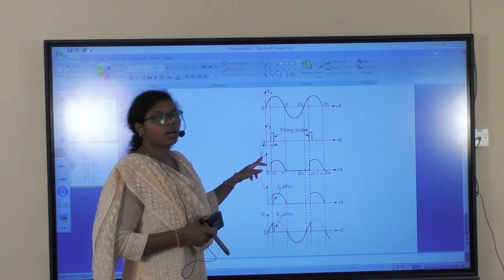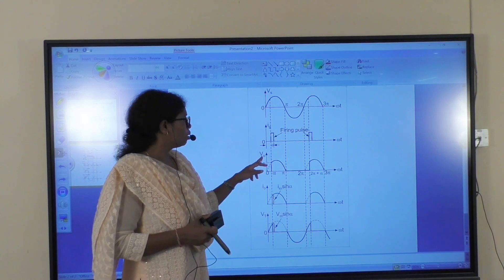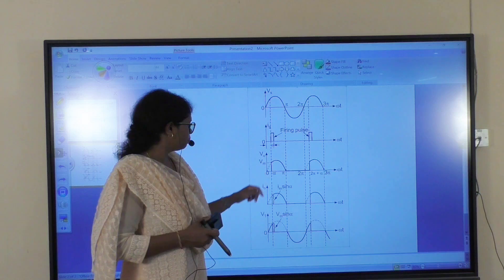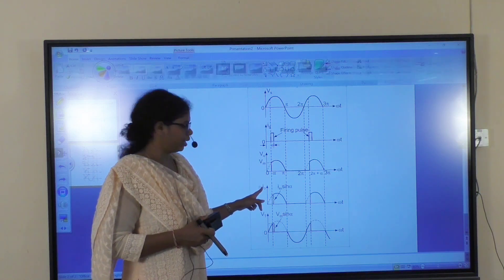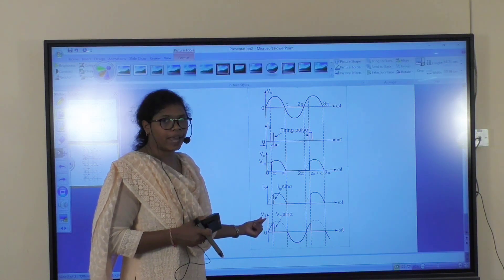Then, V0 is our output voltage. We get V0 across the load. I0 is the load current. And we take the voltage drop across the thyristor.